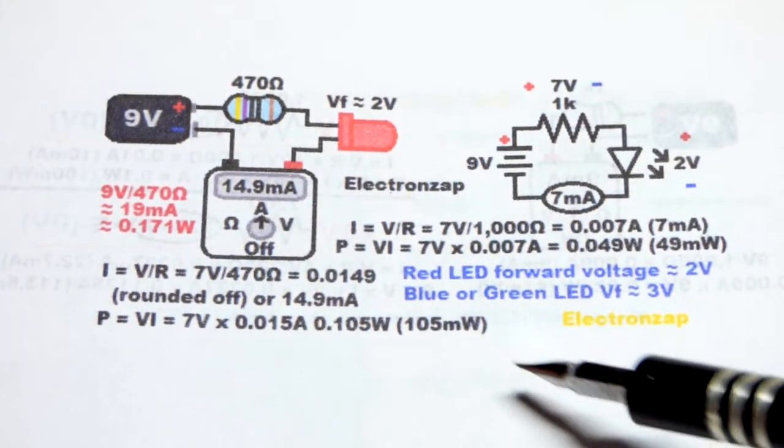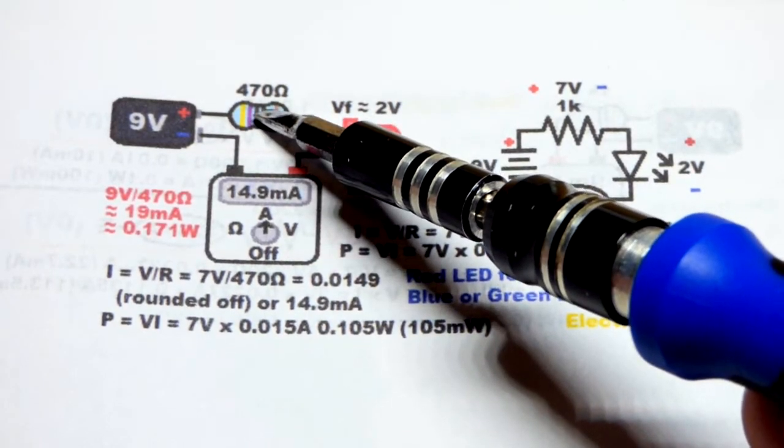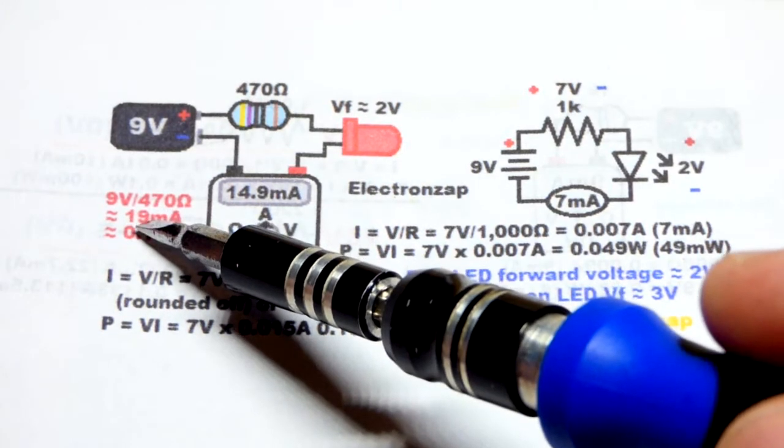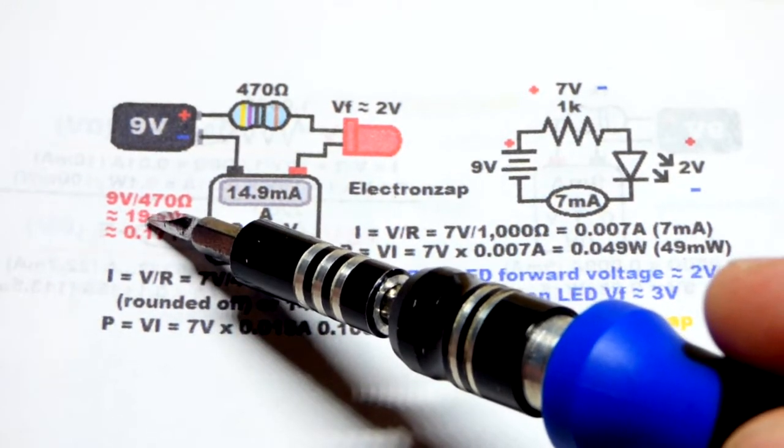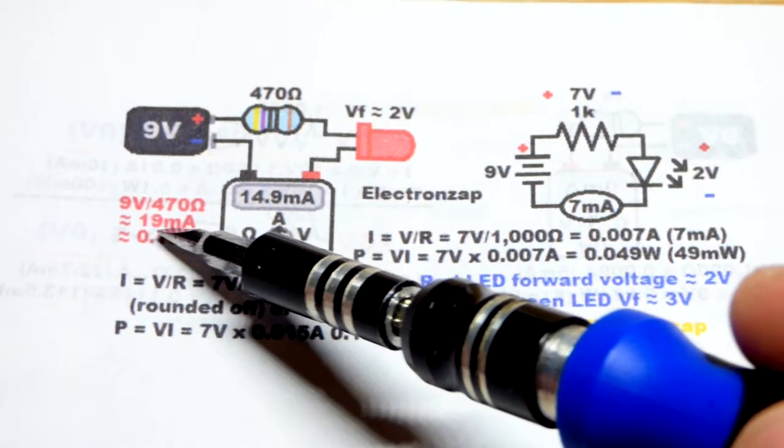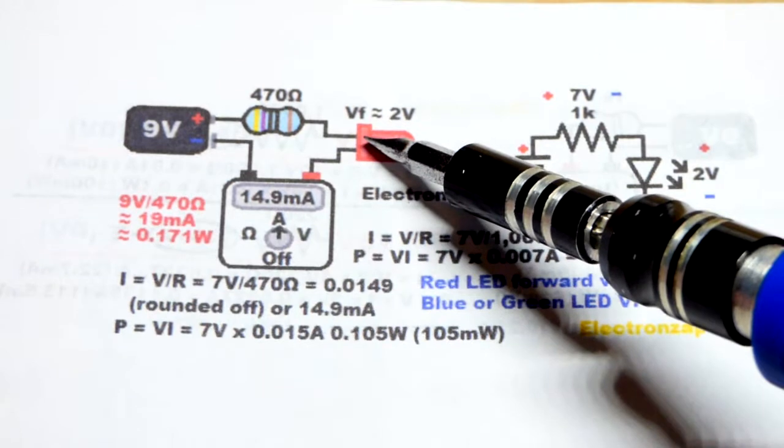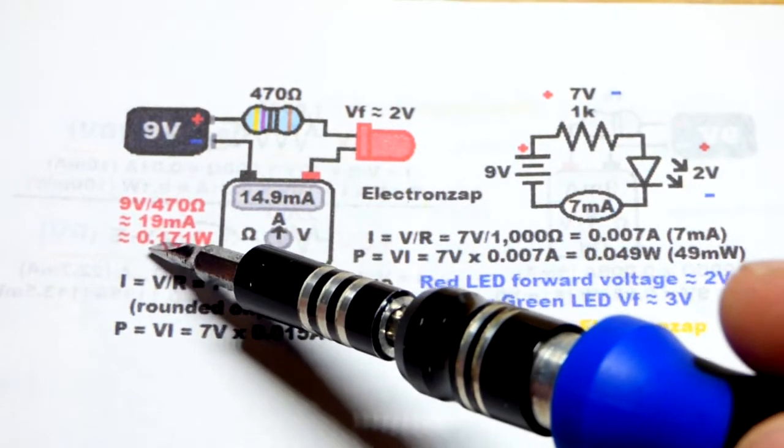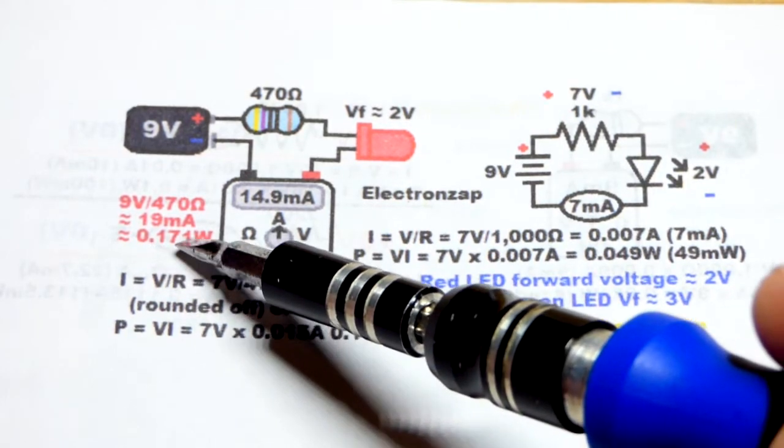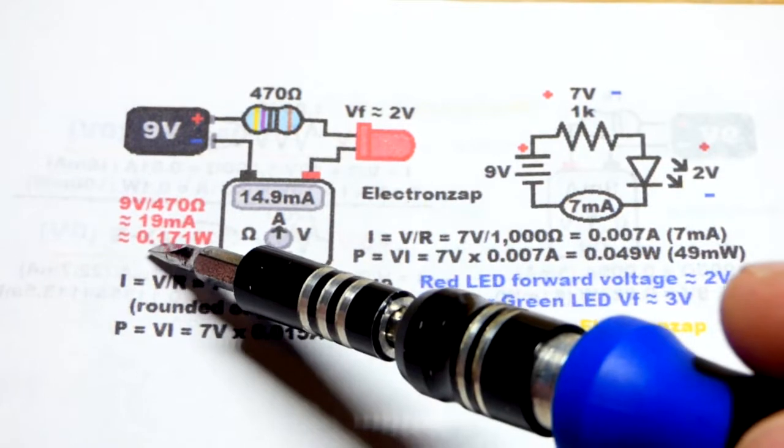Forward biased they're just going to build up about two volts and then let current flow pretty freely after that point. The resistor limits the current. I did not show when I just had a resistor limiting the current of nine volts. We got nine volts divided by 470 ohms, about a little less than 20 milliamps.